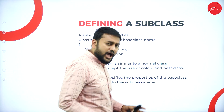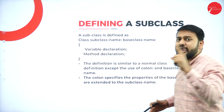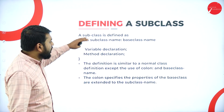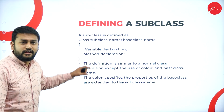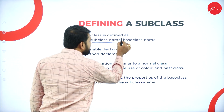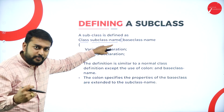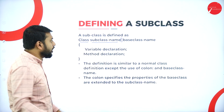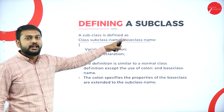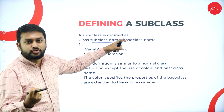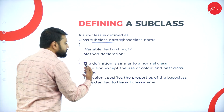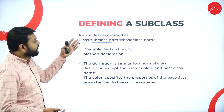The next topic is defining a subclass. You use the keyword class, followed by the name of the subclass, followed by the colon operator — never forget the colon. After the colon, you mention the name of the base class. This statement tells us from which class the inheritance is happening. Inside the class you have variable and method declarations, and then you close the brackets.